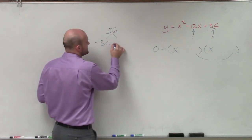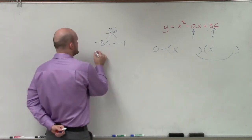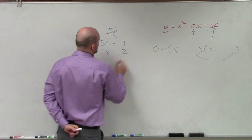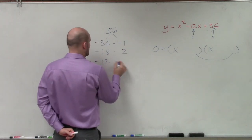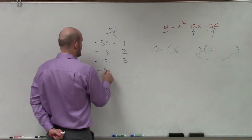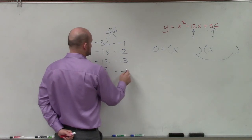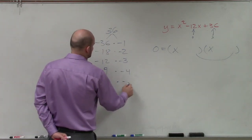It'd have to be negative 36 times negative 1, because that multiplies to give you positive 36. You could do negative 18 times negative 2, negative 12 times negative 3, negative 9 times negative 4, or negative 6 times negative 6.